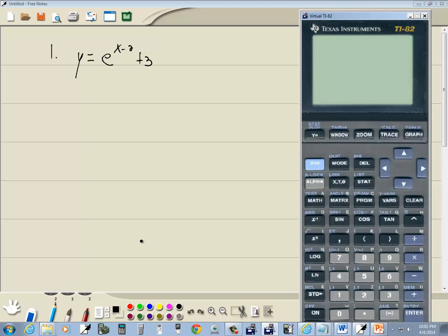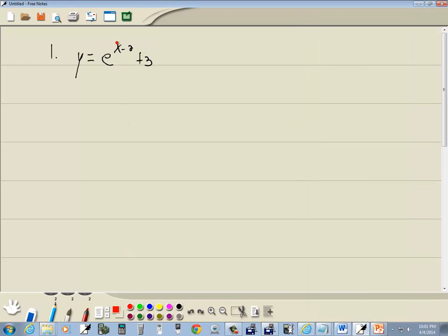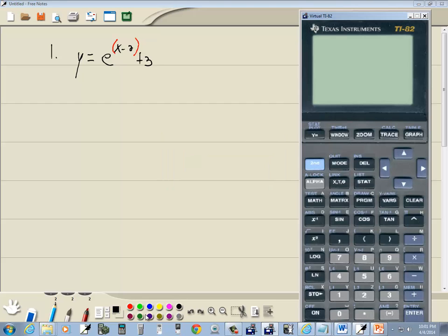Well, on your calculator, anytime you have more than a single number or a single variable in your exponent, you have to put parentheses around it. So the trick to this is we need parentheses around the x minus 2. Now, some calculators will automatically put that there for you and some won't. And to be honest, I'm learning myself. So we'll find out on TI-82 together.